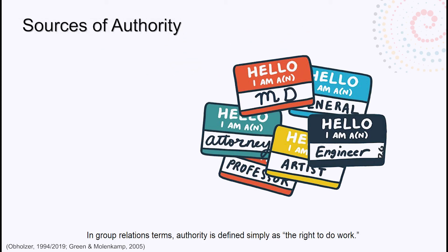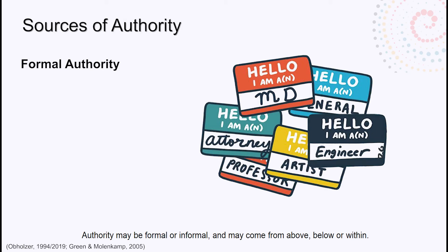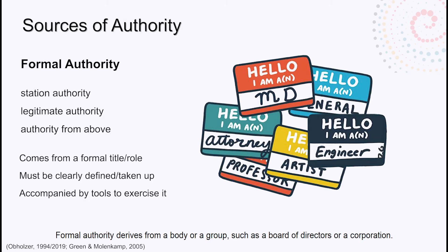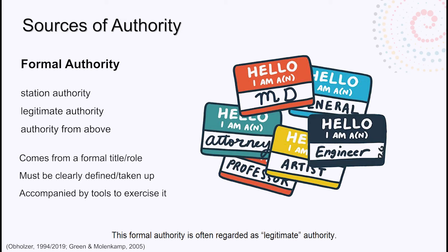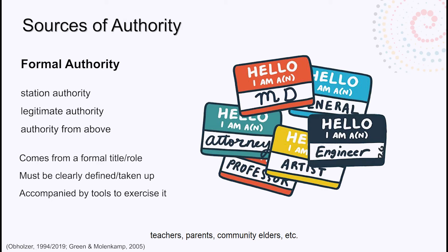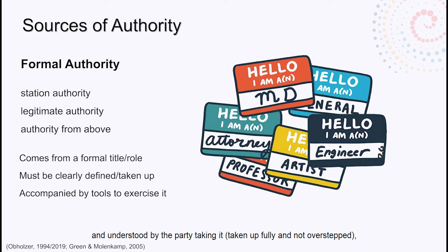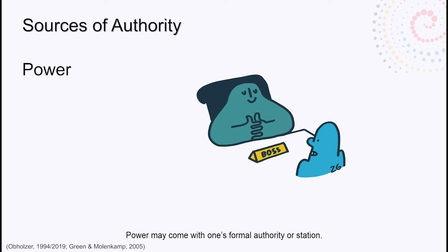In group relations terms, authority is defined simply as the right to do work. Authority may be formal or informal and may come from above, below, or within. Formal authority derives from a body or group such as a board of directors or a corporation. It may also come from a job title or be assigned by a supervisor — this formal authority is often regarded as legitimate authority. Formal authority can also come from cultural norms such as teachers, parents, community elders, etc. Formal authority must be clearly defined by the body assigning it and understood by the party taking it — it must be taken up fully, not overstepped, and be accompanied by the tools to exercise it.